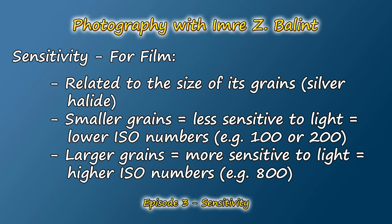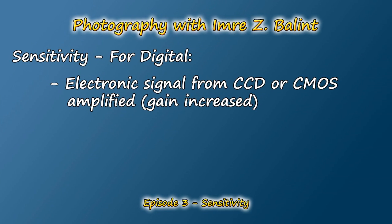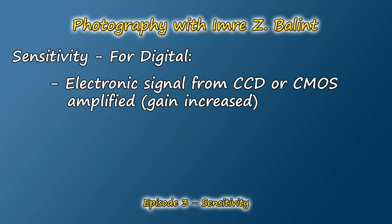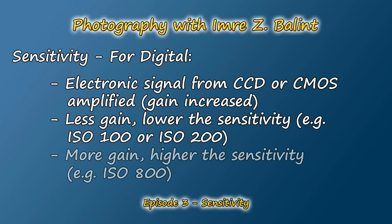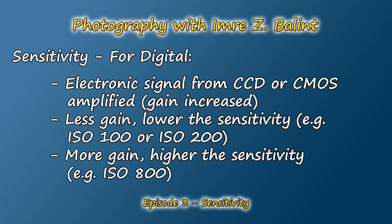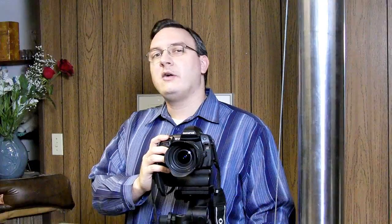The larger the grains on the film, the more sensitive that film will be to light, giving you higher ISO numbers such as 800. The basic idea for sensitivity on a digital camera is more or less the same, except instead of film you have a CCD or CMOS sensor, and the signal output from that sensor is amplified — in other words, the gain is increased. The less gain applied, the lower the sensitivity, around ISO 100 or 200. Apply more gain and you're looking at ISO values of around 800 and higher.